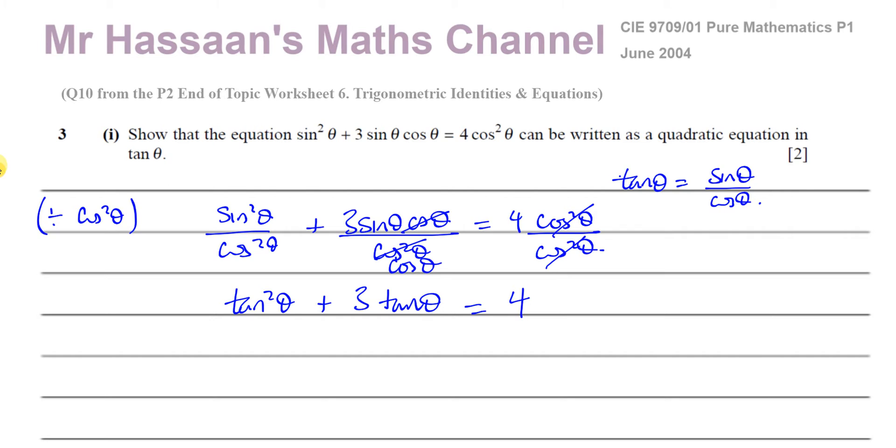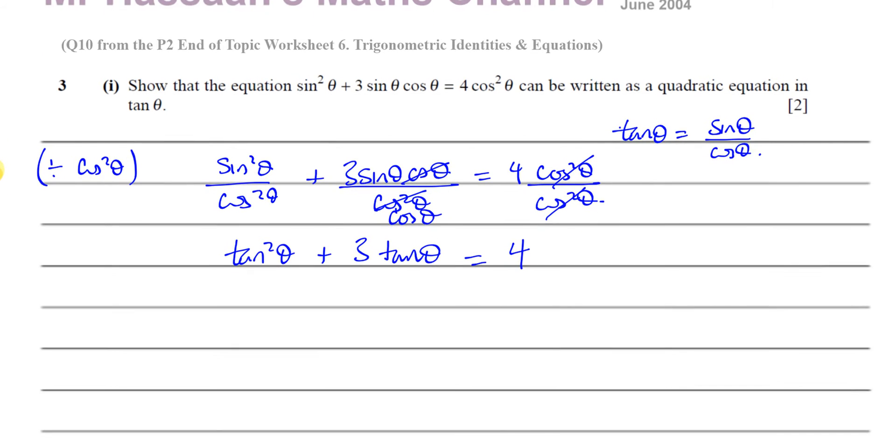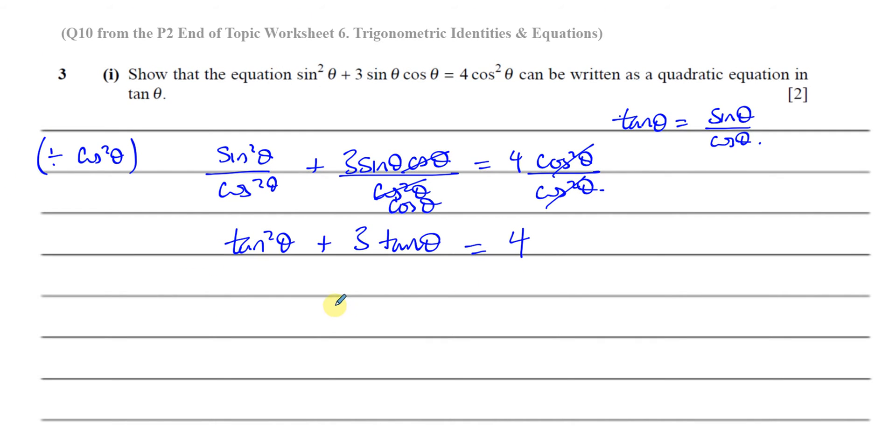And we've done what we had to do. In just one step, we have got rid of the sin²θs, the sin θs, the cos θs, the cos²θs, and everything is now in terms of tan²θ. So this is our quadratic equation. So we can just rewrite it if we want to make it look like a proper quadratic equation. tan²θ + 3 tan θ - 4 = 0. If we left it like that, it's still fine. So there we have the answer to part 1.